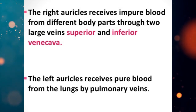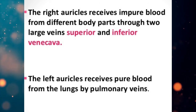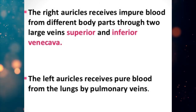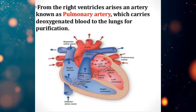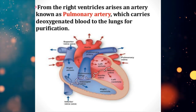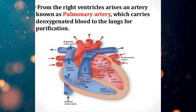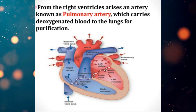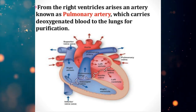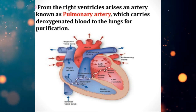One important point to note: we generally say veins carry impure blood, but the pulmonary vein is an exception — it carries pure or oxygenated blood. From the right ventricle arises an artery known as the pulmonary artery, which carries deoxygenated blood to the lungs for purification. This is another exception: arteries generally carry oxygenated blood, but here the pulmonary artery carries impure blood from the heart to the lungs.